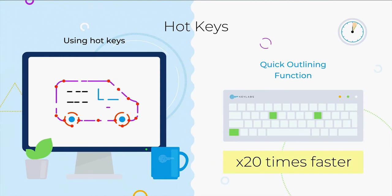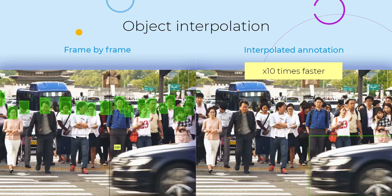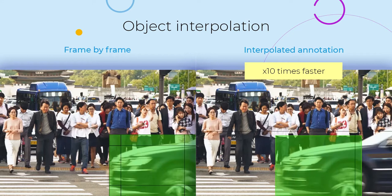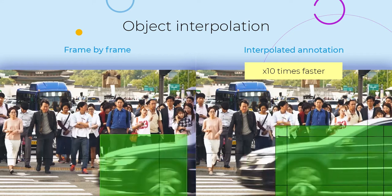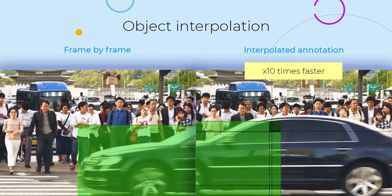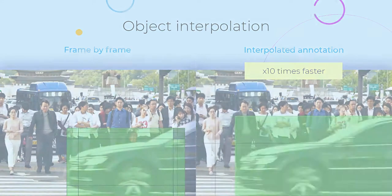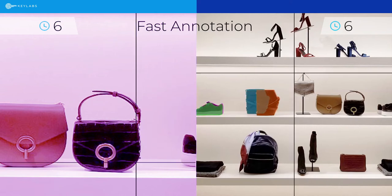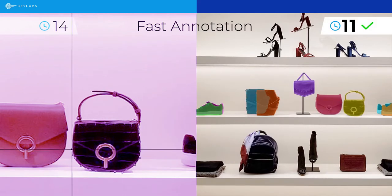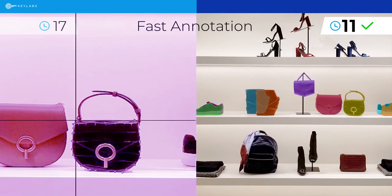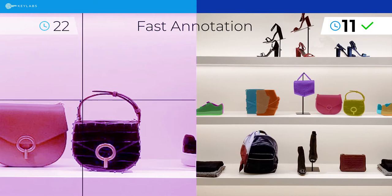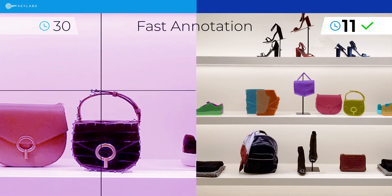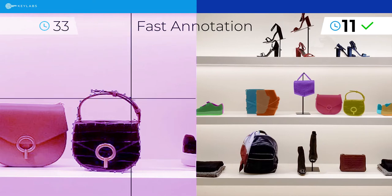Each annotation operation is coupled with efficient keyboard hotkeys. Keylabs uses interpolation to track objects across multiple frames. Our quick outlining function and augmented annotation can identify the shape of an object and create a polygon label automatically.